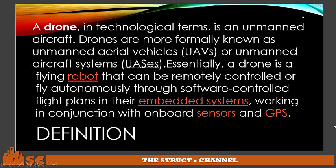A drone, in technological terms, is an unmanned aircraft. Drones are more formally known as unmanned aerial vehicle, called UAVs, or unmanned aircraft system, or UAS. Essentially, a drone is a flying robot that can be remotely controlled or fly autonomously through software-controlled flight plans in their embedded system working in conjunction with onboard sensors and GPS.